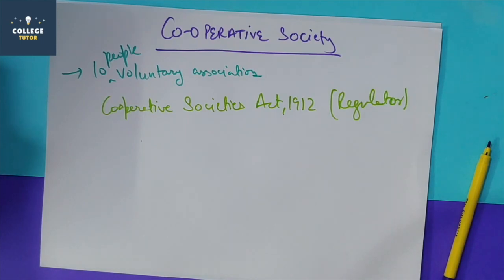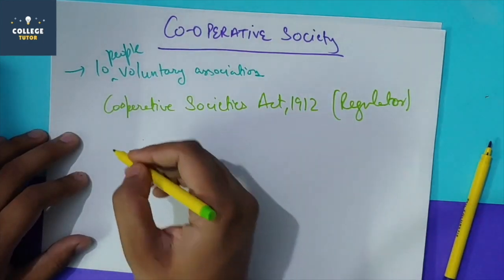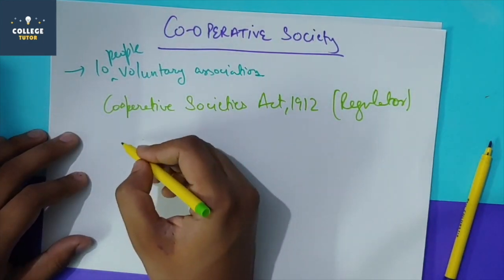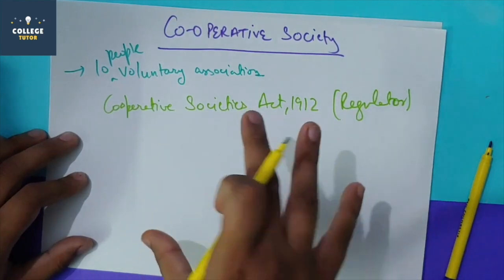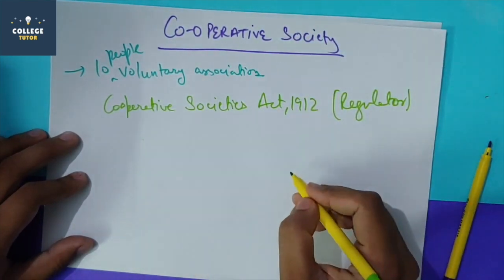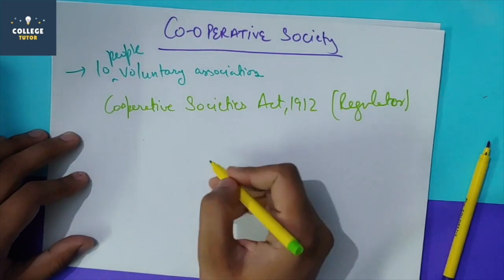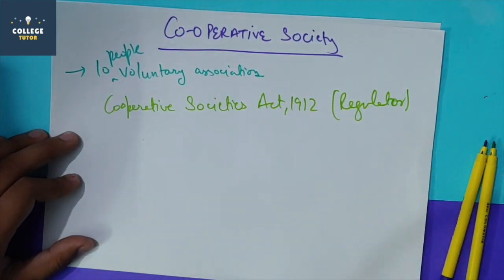Now let's look at the types of cooperative societies, which have come in many exams. Cooperative society types can be categorized on the basis of objectives. Generally, there are 4 to 5 types. Let's discuss them together.